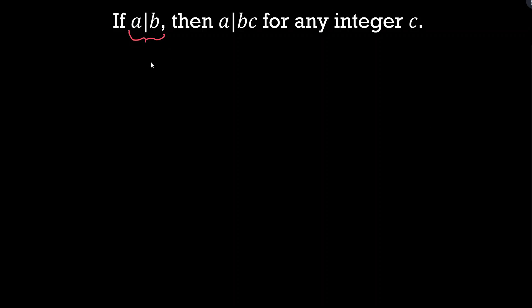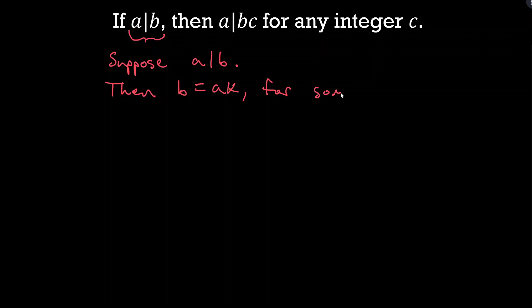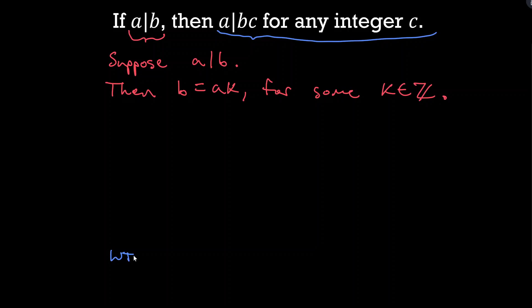My strategy for direct proof: we always want to assume the 'if' statement. So the first part is: suppose A divides B. We unpack what this means by applying the definition — so B equals A times K for some integer K. What we want to show is that A divides BC for any integer C. Writing down what we want to show guides the proof: BC equals A times some integer L.